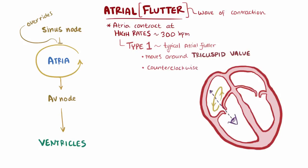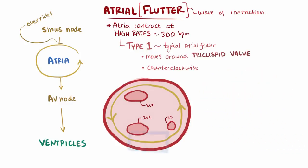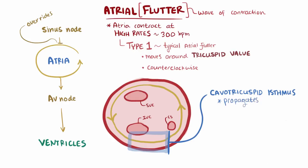Imagine that you're an eyeball looking up through the valve. You'll see the superior vena cava, or SVC, the inferior vena cava, or IVC, and the coronary sinus, or CS. In this case, a stretch of tissue along the pathway called the cavo-tricuspid isthmus propagates the signal more slowly than the surrounding tissue.